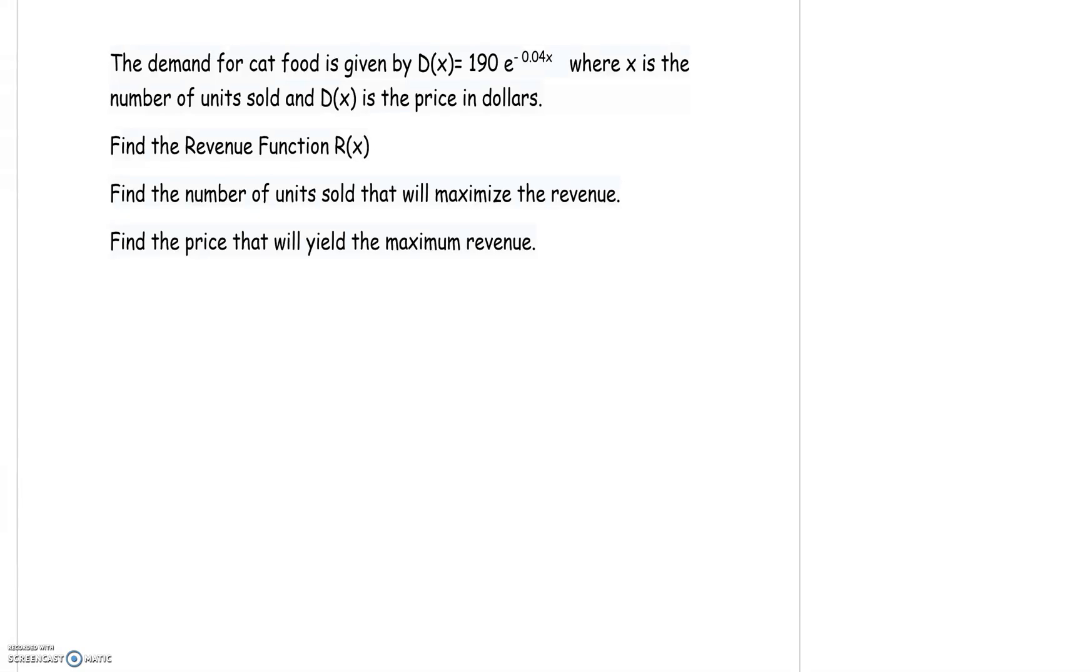Hi, today's lesson is going to be on optimizing revenue functions. Our example today involves a demand for cat food given by the function D of X equals 190 e to the negative 0.04 X. X is the number of units sold and D of X is the price. So they want three things: find the revenue function, find the number of units sold that will maximize the revenue, and find the price that will yield the maximum revenue.